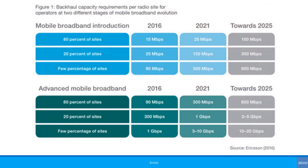According to Ericsson stats, 20% of sites in advanced networks will need 3 to 5 Gbps capacity by 2025, but 80% of sites will need less than 1 Gbps. So fibre is great, but not the only option. We also have to look at microwave backhaul technologies that can provide good data rates.